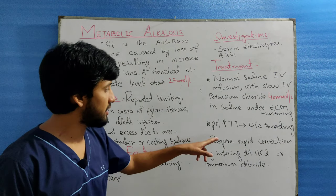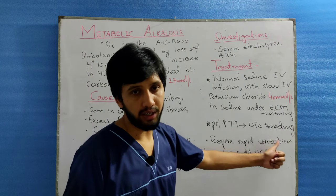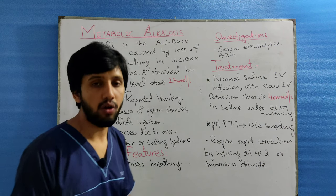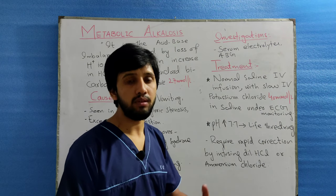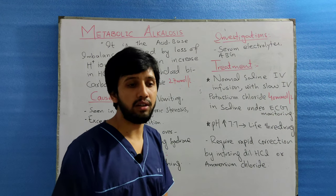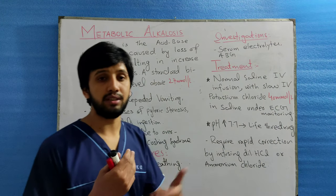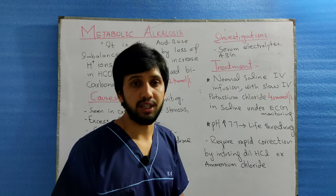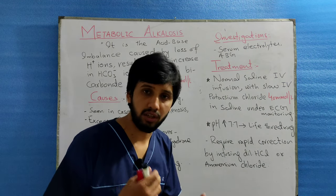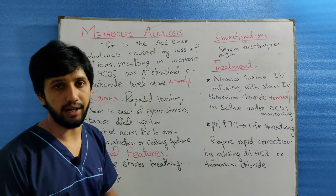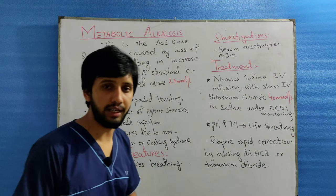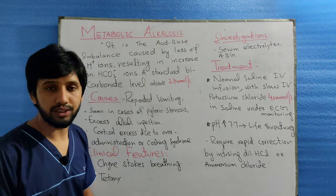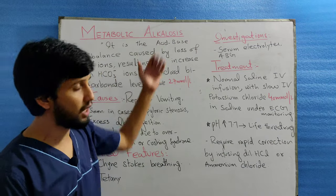If pH is greater than 7.7, it is a life-threatening condition and requires rapid correction by infusion of dilute HCl or ammonium chloride. Sometimes we give the patient an air bag in which he breathes and re-breathes carbon dioxide — this is done in cases of anxiety where the cause is anxiety. This is the treatment of metabolic alkalosis. Next, we will study respiratory alkalosis.